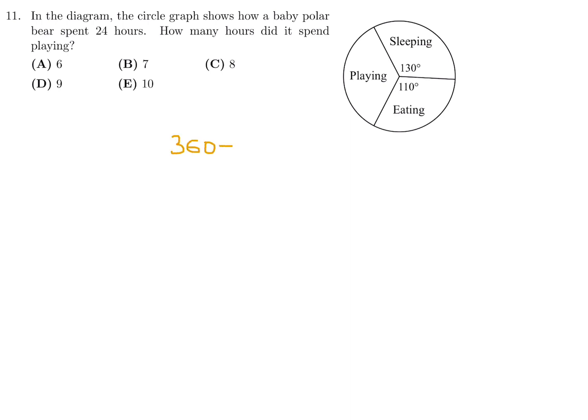360 degrees minus 130 minus 110 would be the degrees that are assigned to playing, and that is 120 degrees. So 120 out of the total 360 degrees, which is one-third, is how much the playing section comprises of the entire circle.